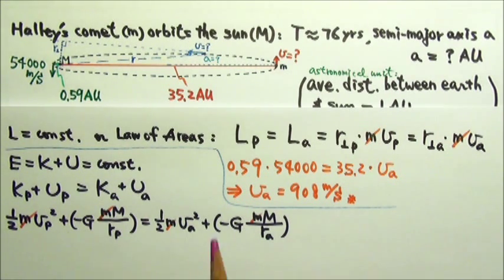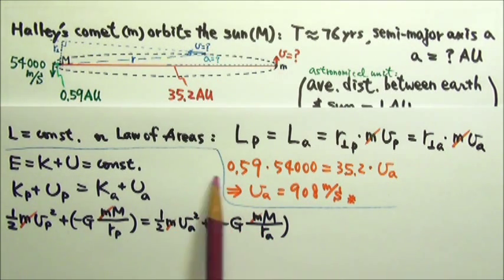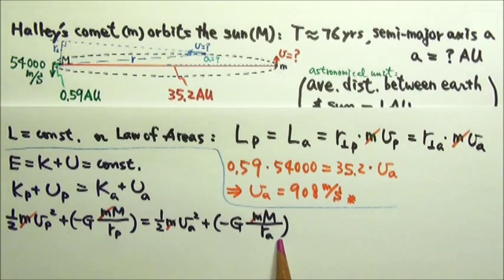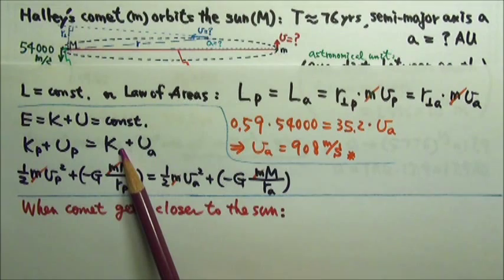Therefore, if a problem involves a location that is not the closest nor the farthest from the sun, it would be better to use conservation of energy. And if we just need to analyze this qualitatively, we can use either method.